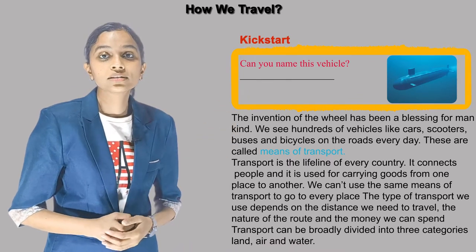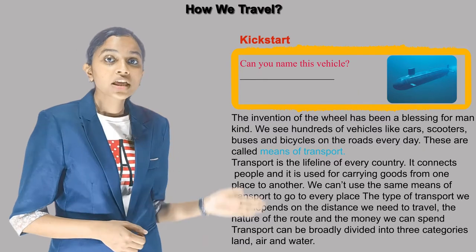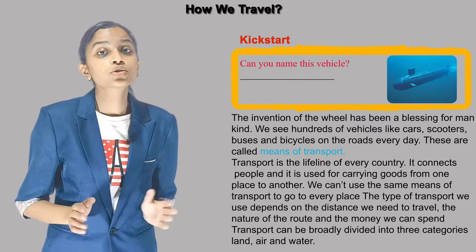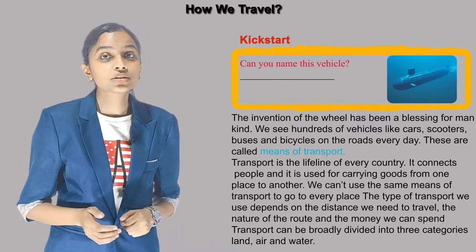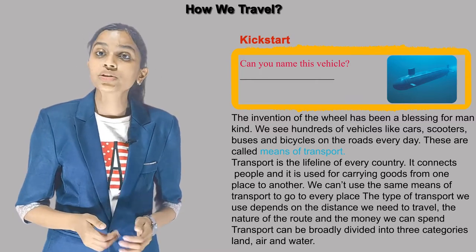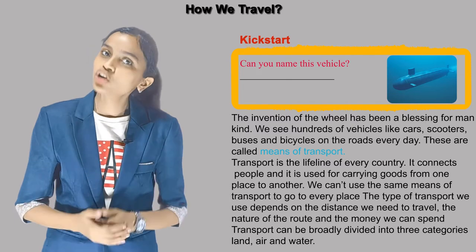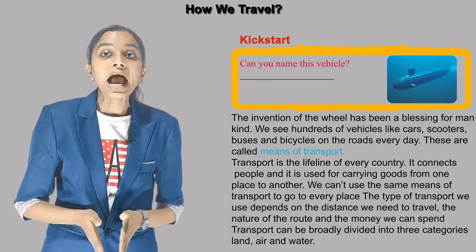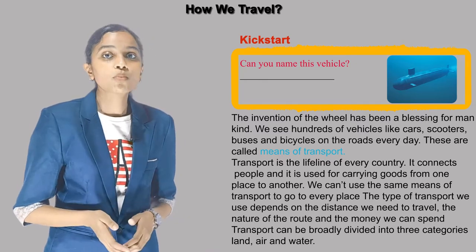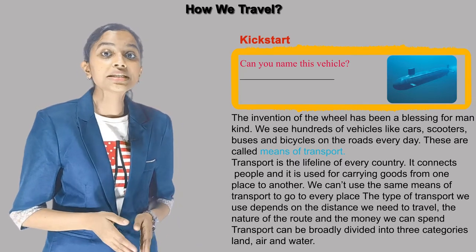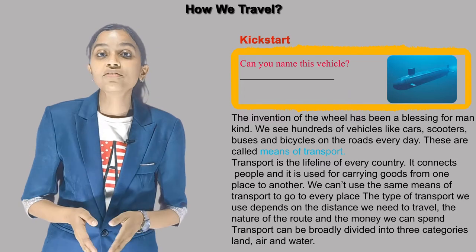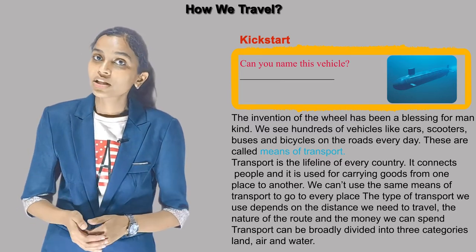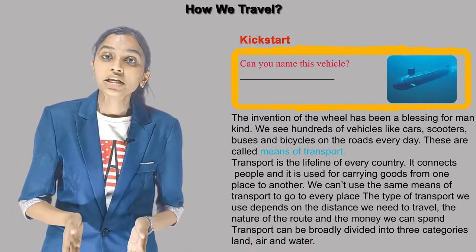Can you name this vehicle? The invention of the wheel has been a blessing for mankind. We see hundreds of vehicles like cars, scooters, buses and bicycles on the roads. These are called means of transport. Transport is the lifeline of every country. It connects people and is used for carrying goods from one place to another. We can't use the same means of transport to go every place. The type of transport we use depends on the distance we need to travel, the nature of the route, and the money we can spend.